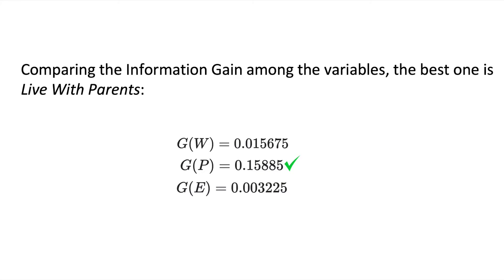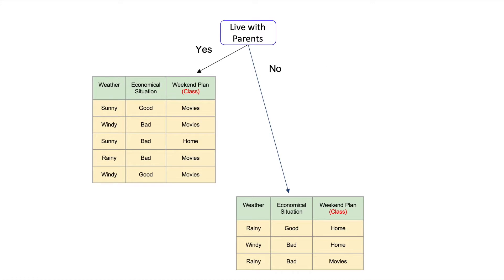Comparing the three information gains, the variable 'live with parents' has the highest value, so we select it as the root node of the tree. We create two edges depending on the values the variable may take: one edge for yes and another for no. Then we divide the database into two subsets — all rows where live with parents is yes, and all rows where live with parents is no.